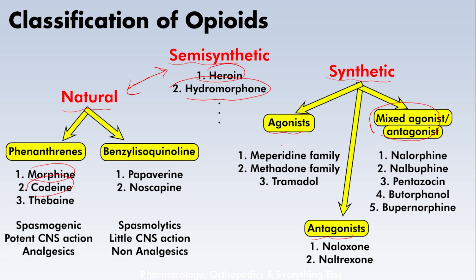Among the synthetic agonists, we have the meperidine family, the methadone family, and tramadol. The meperidine family — originally called the phenylpiperidines — includes meperidine as the prototypical drug, and also includes fentanyl. So fentanyl is classified within the phenylpiperidine family in the synthetic opioid domain.